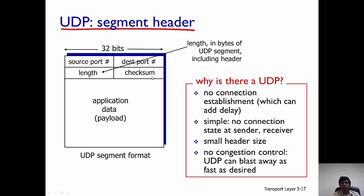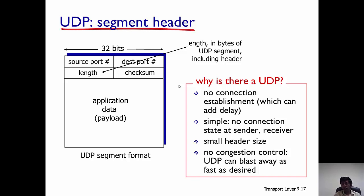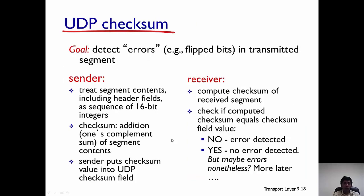Before I conclude, I want to briefly mention why we have UDP. Because there is no connection establishment, it's simple, and there's no congestion control. UDP can just blast away at whatever speed you desire.